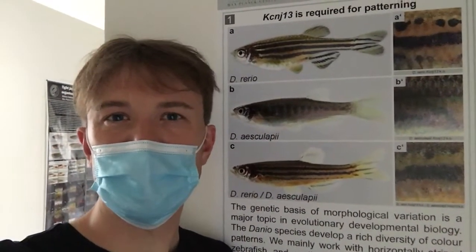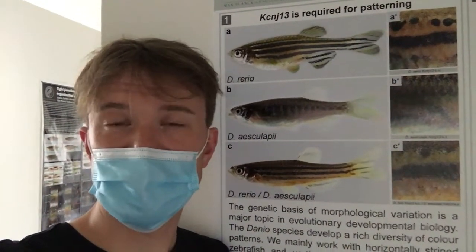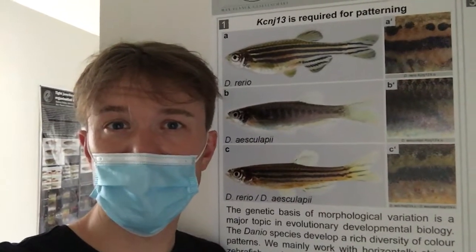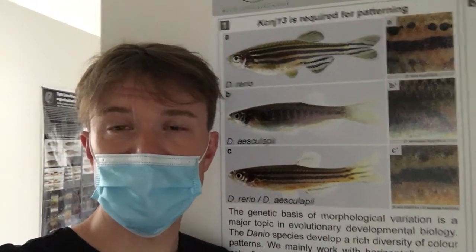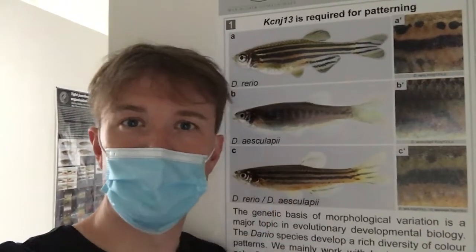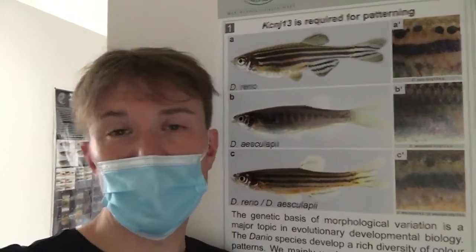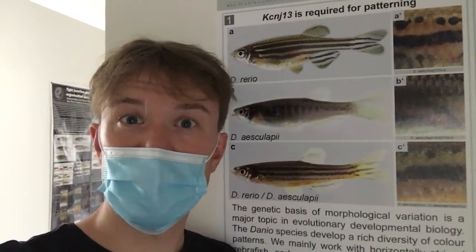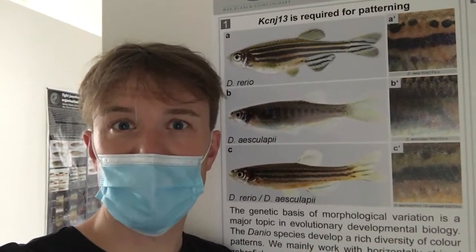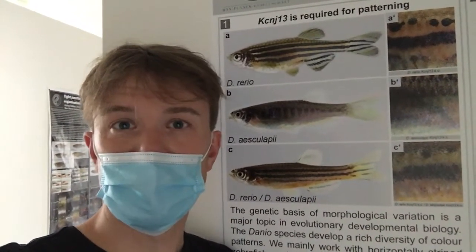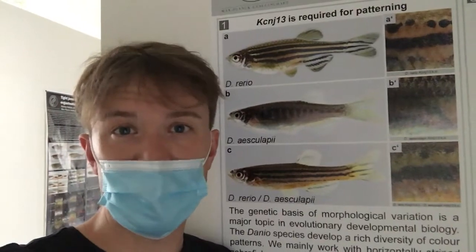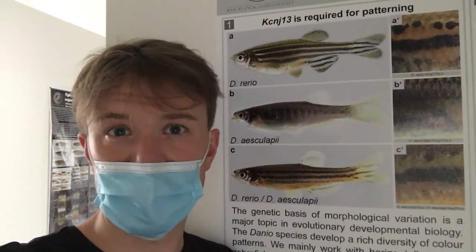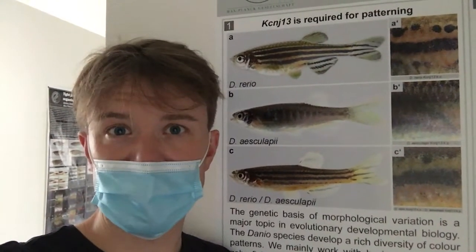In order to understand how the different patterns evolve, we would like to make hybrids between the species and this is actually possible. We would like to interbreed them even further over many generations in order to make a test called QTL mapping. But these hybrids are unfortunately sterile, so we can't do that.